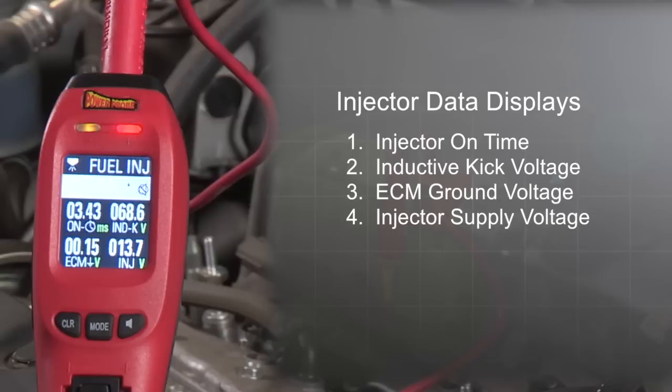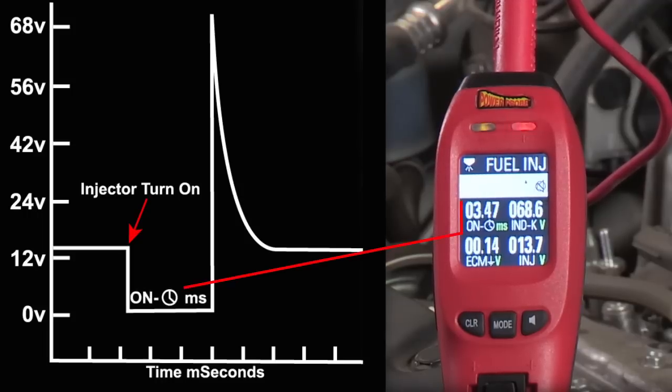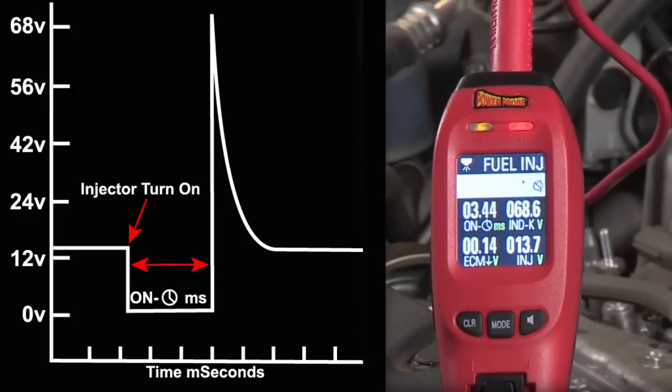The Power Probe 4's injector mode displays four injector data points. One, injector on time in milliseconds. This means the total amount of time the injector is energized and supplying fuel to the cylinder.